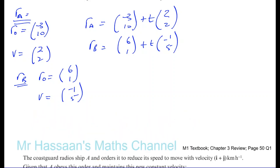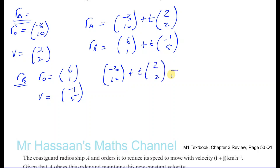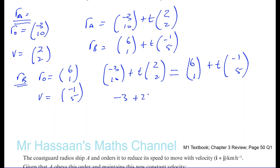If the ships are to collide, they will be at the same place at the same time. So we set the position vectors equal: (−3, 10) + t·(2, 2) = (6, 1) + t·(−1, 5). Equating the i-components gives −3 + 2t = 6 − t, and equating the j-components gives 10 + 2t = 1 + 5t.